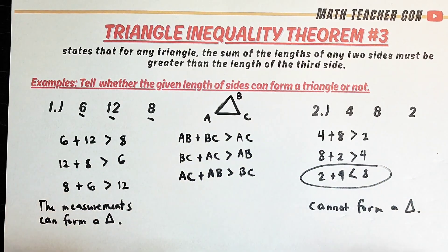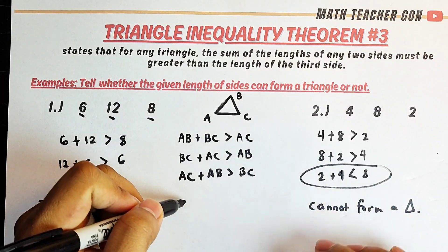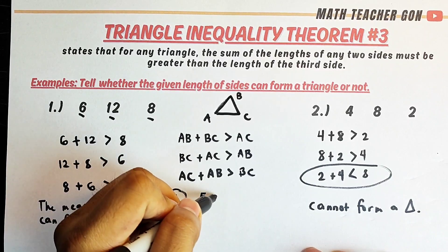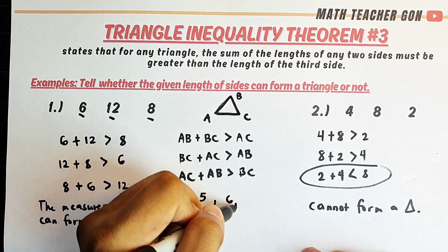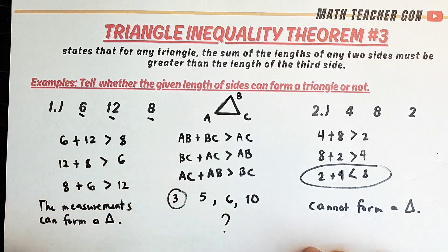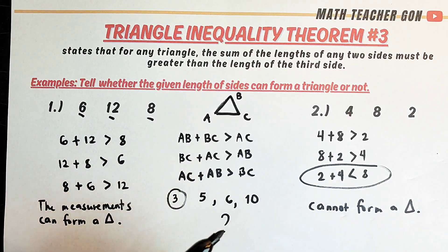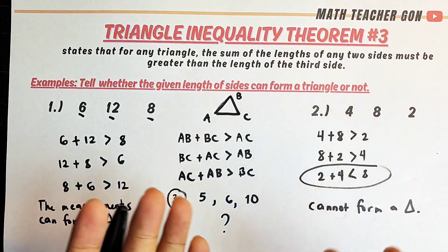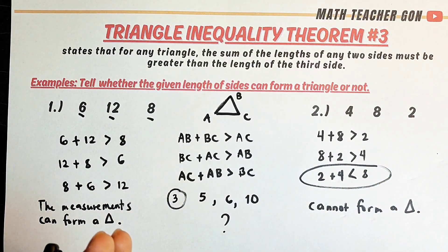That's it for Triangle Inequality Theorem Number Three. For your assignment, can you identify whether the measurements 5, 6, and 10 can form a triangle? If you enjoy my channel, don't forget to like and subscribe and hit the bell button to be updated on the latest uploads. Again, it's me Teacher Gone — thank you and bye!